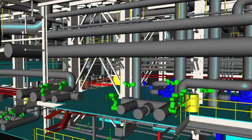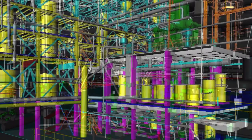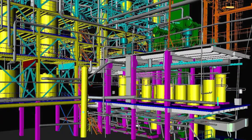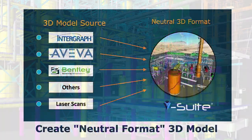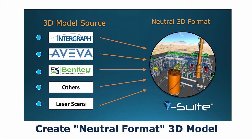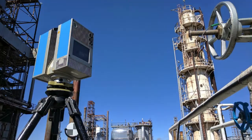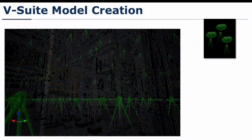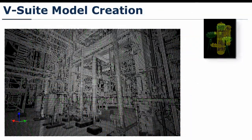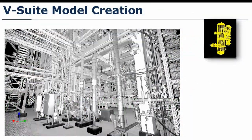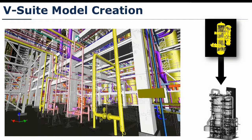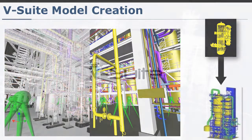vSuite can convert and combine existing 3D models that have been created with engineering software products from third parties such as Intergraph, Aveva, Bentley or Autodesk. Laser scans can also be used to create, supplement or update the digital twin using vSuite's assisted modeling automation and asset catalogues.